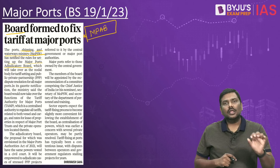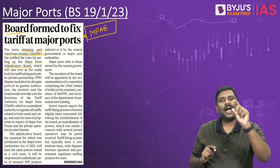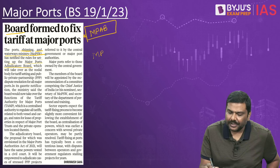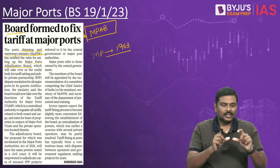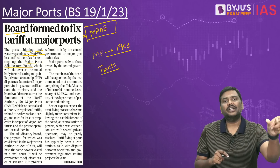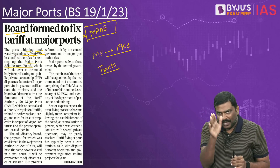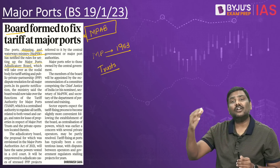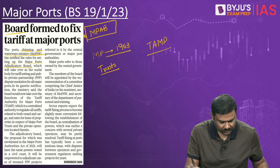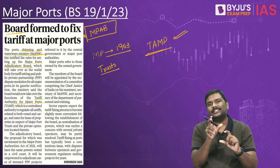Earlier, the central government regulated major ports under the Major Port Trust Act of 1963. Under this act, trusts were set up at each major port to oversee functioning. Apart from the trust, the Tariff Authority for Major Ports (TAMP) was set up during the 1990s to determine tariffs for port-related services, whether provided by government entities or private players through PPP.